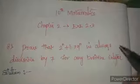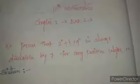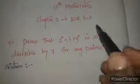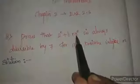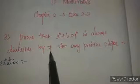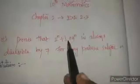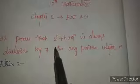Hello students, this is Maxson. I will teach about 10th Mathematics, Chapter 2, Exercise 2.3, Question 8: prove that 2^n + 6·9^n is always divisible by 7 for any positive integer n.